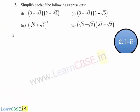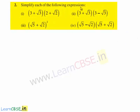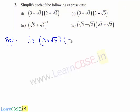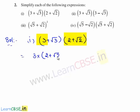Let us move on to the second question in the exercise. The question is to simplify each of the following expressions. The first expression given is (3 plus root 3) times (2 plus root 2). To simplify this we first multiply each term of the first expression with the second expression. That is 3 times (2 plus root 2) plus root 3 times (2 plus root 2).